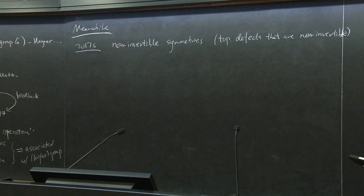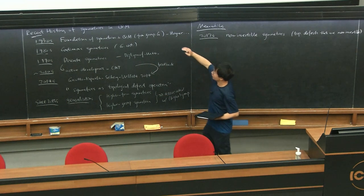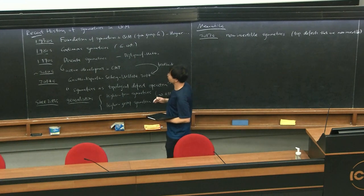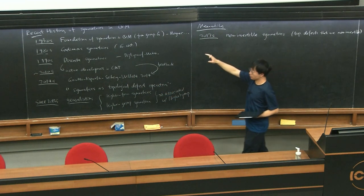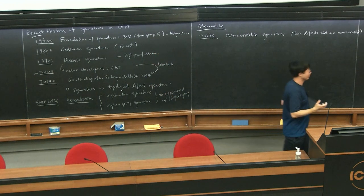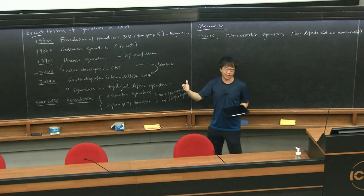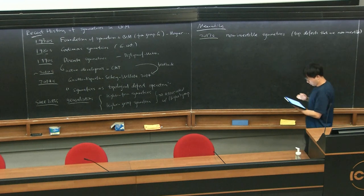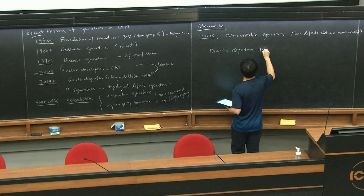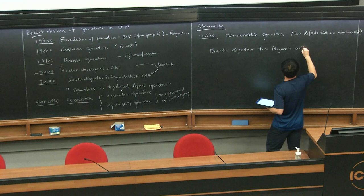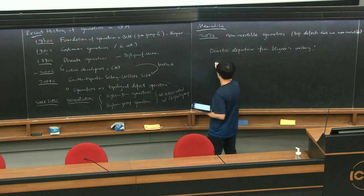All these notions will be explained in detail in the main parts of the lecture. Why is this a drastic departure from previous notions of symmetry? Because from the foundations laid down by Wigner in the 1930s, a crucial assumption is that symmetry should define a unitary operator on Hilbert space — and that is closely related to why symmetries discussed in the past are always associated with a group. A consequence of non-invertibility is that the corresponding topological defect operator would not become a unitary operator acting on Hilbert space. That's a very drastic departure.